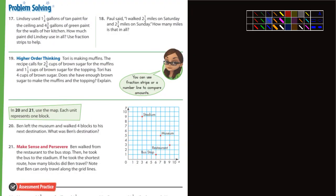Now let's look at the problem solving page. Problem 17: Lindsay used one and a quarter gallons of tan paint for the ceiling and four and three-eighths gallons of green paint for the walls — add them up for total paint used. Number 18: Paul walked two and a half miles and two and three-quarter miles — add them up for total miles. Higher order thinking: Tori is making muffins requiring two and five-sixths cups plus one and one-third cups of brown sugar; Tori has four cups — does she have enough?